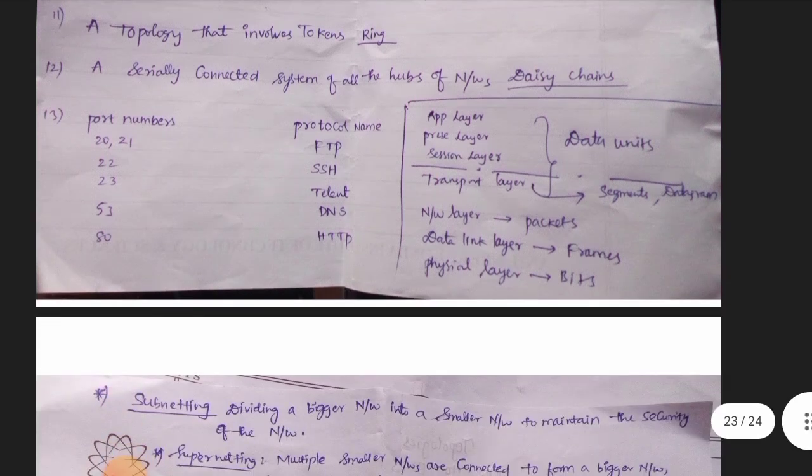Mostly port numbers: port 20 and 21 is FTP. Port 22 is SSH. Port 23 is Telnet. DNS is port 53. HTTP is port 80.